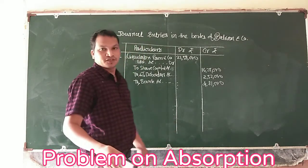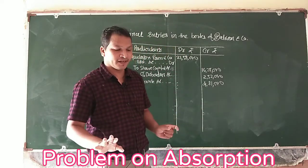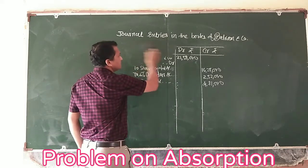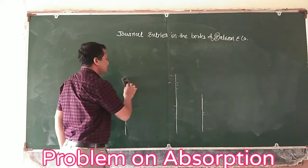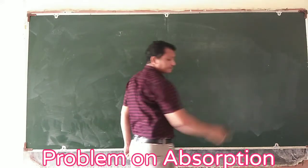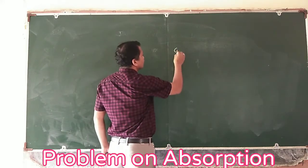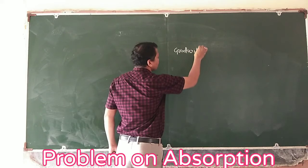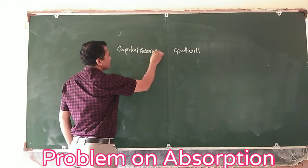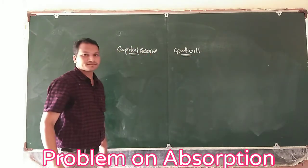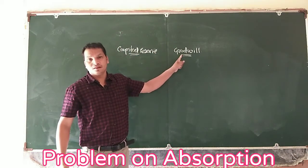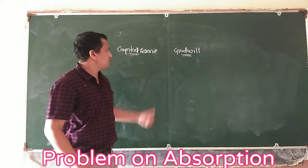When we completed problem number 7, we also discussed goodwill and capital reserve. If we have goodwill or capital reserve, we consider net assets. When the net assets are less than PC, it is goodwill. If the net assets are more than PC, it is goodwill — wait, that means when net assets exceed PC it results in capital reserve.